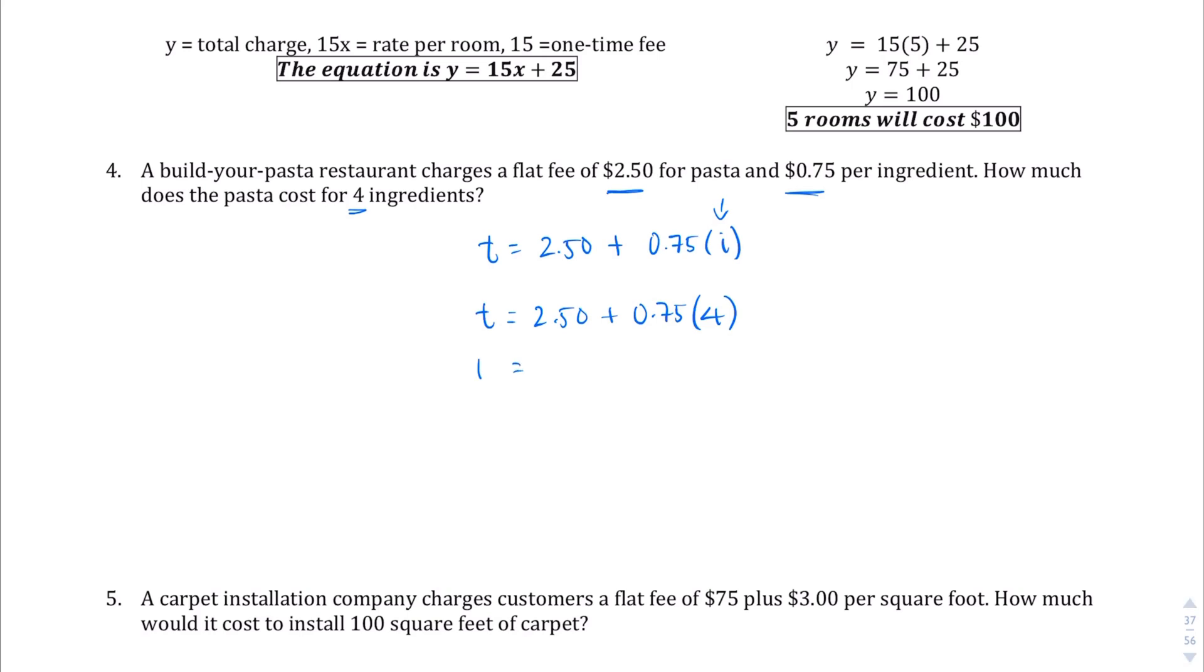So let's figure out how much that costs. $2.50 plus $0.75 for each ingredient. We want four ingredients. So what should come out is $2.50 plus $0.75 times four, which should come out to, what is that, $3? I think it's $3. You might want to check my math there. But if you add $3 and $2.50, you should end up with $5.50. So the pasta plate is going to cost you $5.50.